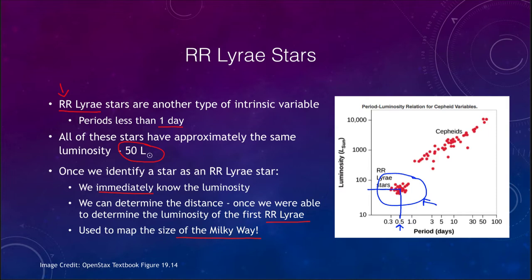So these are two ways to determine distances using variable stars — RR Lyrae stars and Cepheid variables — allowing us to map distances not only within our galaxy but also to other nearby galaxies. However, we are going to need more methods. These stars are not visible across the entire universe. When we consider objects hundreds of millions or billions of light years away, even though Cepheid and RR Lyrae stars would be present there, they won't be bright enough to be seen across those immense distances.